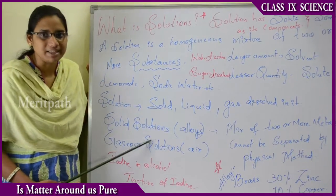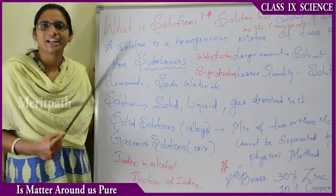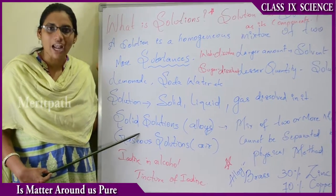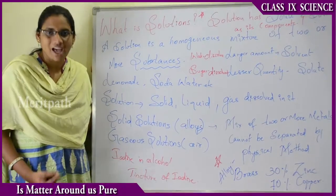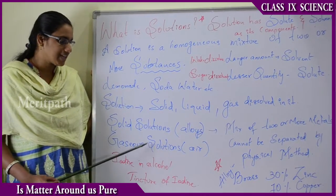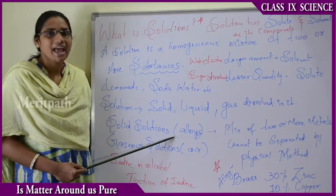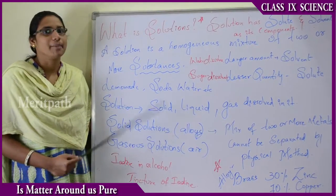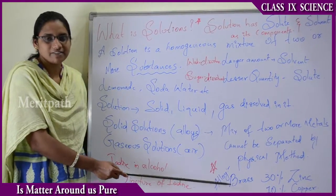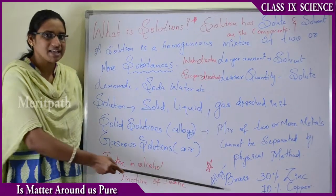A solid solution is a mixture where solid is mixed with solid only — an alloy is an example. A gaseous solution is a mixture of different gases; the best example is air in our atmosphere. The best example of a solid solution is brass, which is an alloy of 30% zinc and 70% copper. Importantly, brass is an alloy, not a metal.